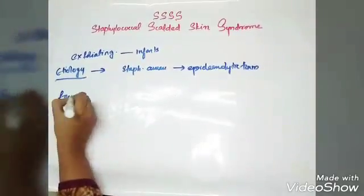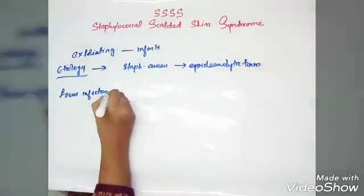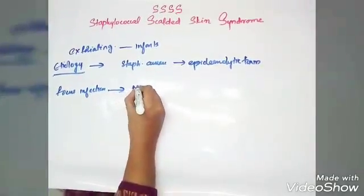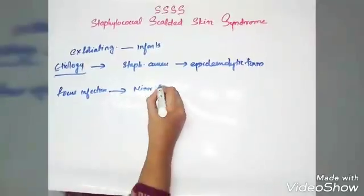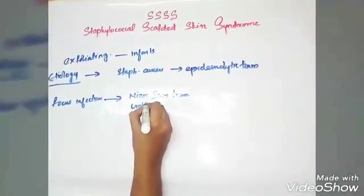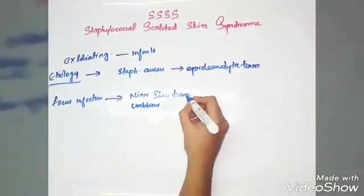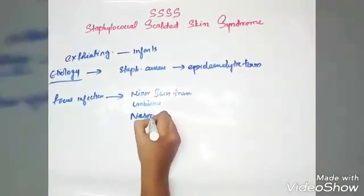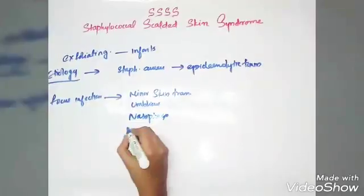Minor skin trauma, umbilicus, nasopharynx, and urinary tract are sites where Staphylococcus aureus can colonize.